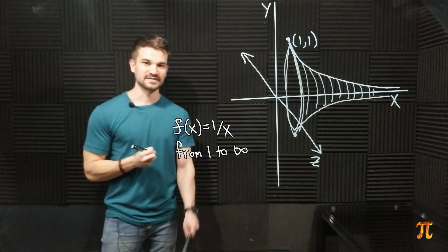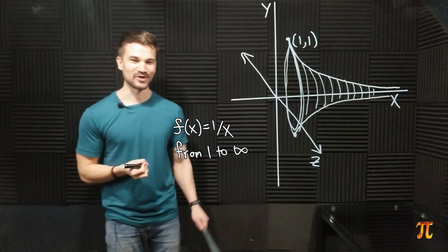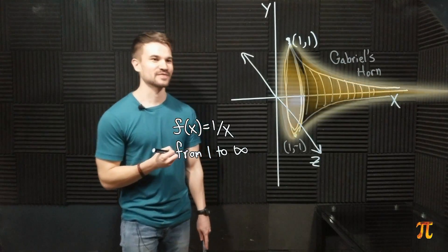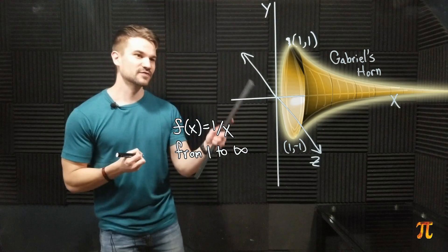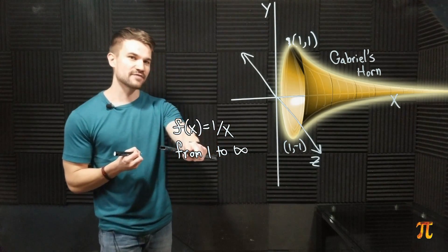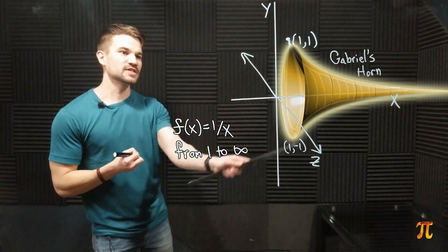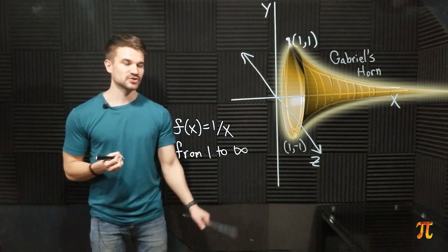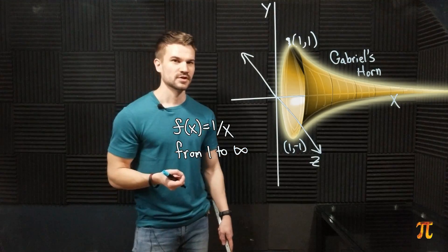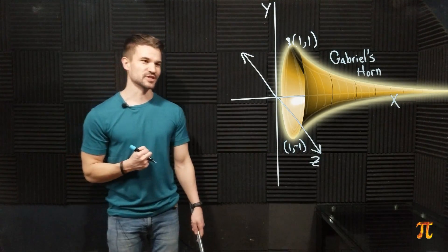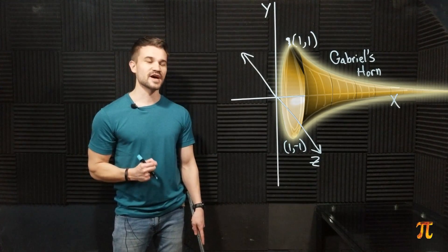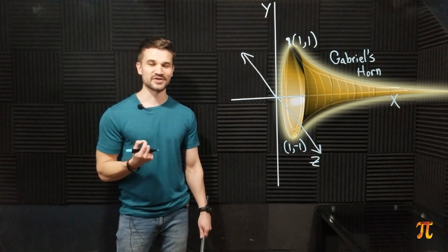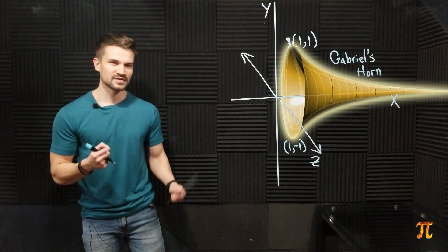So here we have Gabriel's Horn — the solid of revolution formed by taking the graph of f(x) = 1/x and rotating it through the third dimension. You can see why it gets its name: it looks like a horn. It's a solid of revolution, so we can find its volume and surface area using the normal formulas for solids of revolution. So let's find the volume first.